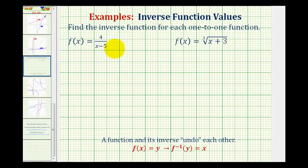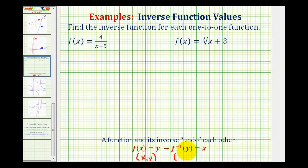We want to find the inverse function for each of the given one-to-one functions. Since the functions are one-to-one, we know their inverses are also functions. Remember, a function and its inverse undo each other — if f(x) = y, then f⁻¹(y) = x. This means for every point (x, y) on f, there is a corresponding point (y, x) on the inverse. We can use this idea — interchanging x and y coordinates — to determine the equation of inverse functions.